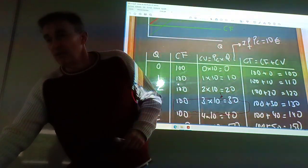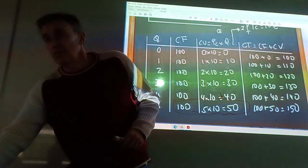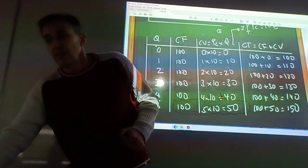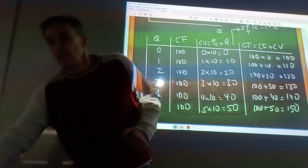Now we have an exercise about the level of production, Q quantity, zero, one, two, three, four, and five.